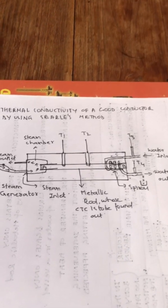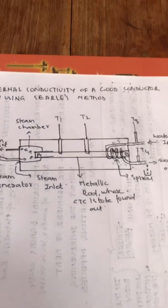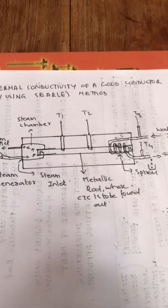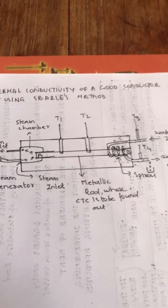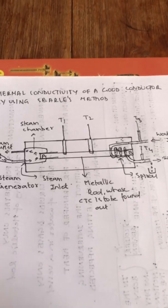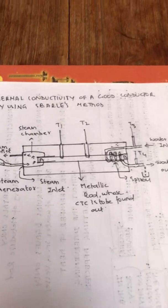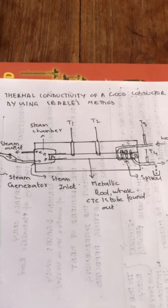We are finding the thermal conductivity of a good conductor using Searle's method. You might ask: is there thermal conductivity of a bad conductor also? Yes, there is, and there is an experiment to find it — known as Lee's disk method. Fortunately, that is not in the syllabus, so we only need to worry about Searle's method.